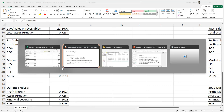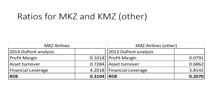Comparing the two airlines: MKZ has a higher profit margin and higher asset turnover than KMZ. Financial leverage is similar for both, likely because both airlines must take on significant long-term debt to purchase aircraft. But the combined effect yields a 31% return on equity for MKZ versus approximately 20.7% for KMZ. The DuPont analysis shows that it is primarily the lower profit margin that pulls KMZ back in terms of profitability.